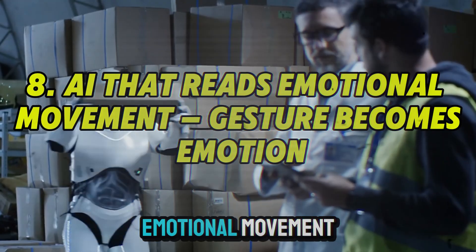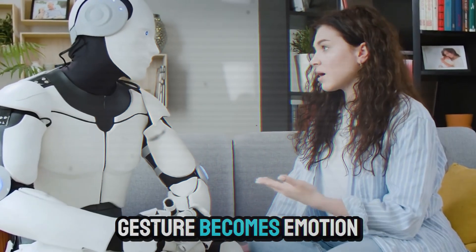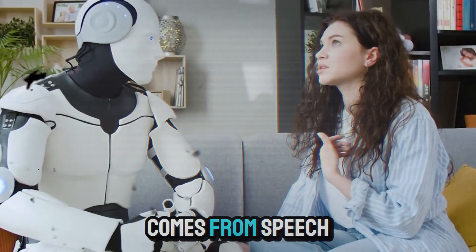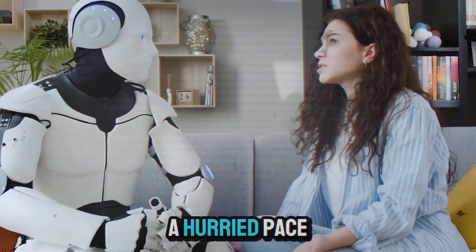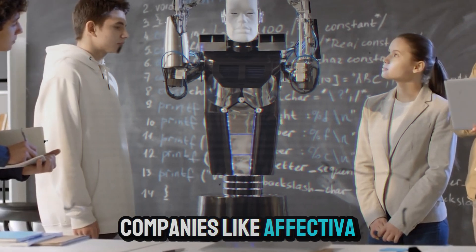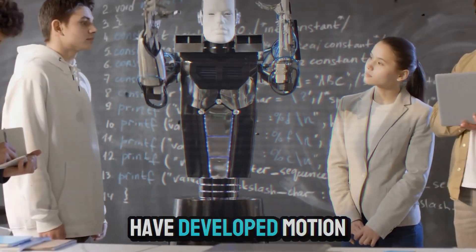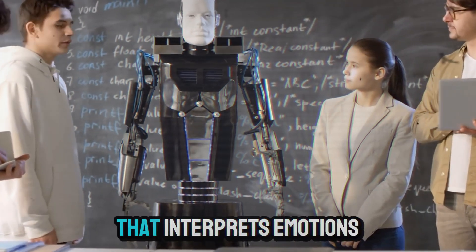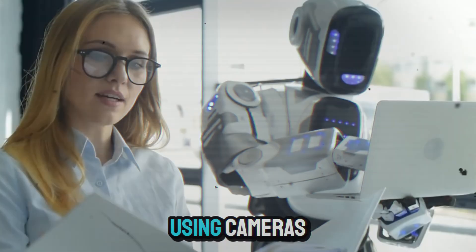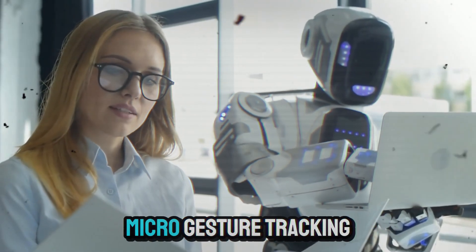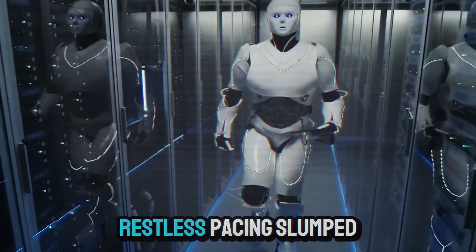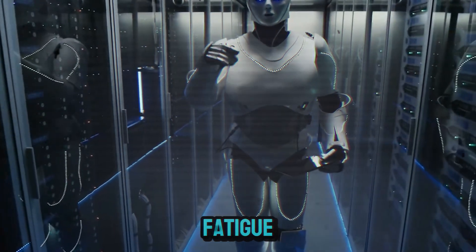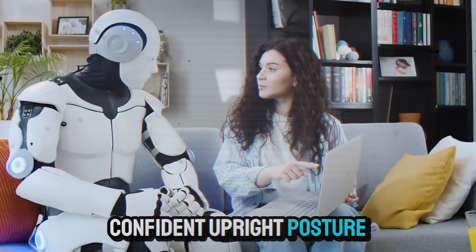8. AI that reads emotional movement. Gesture becomes emotion. Not all emotion comes from speech. Sometimes it's in a shrug, a slump, or a hurried pace. Companies like Affectiva and Neurodive have developed motion detection AI that interprets emotions through movement. Using cameras, posture sensors, and micro-gesture tracking, this tech can read nervous hand-fidgeting, restless pacing, slumped fatigue, confident upright posture.